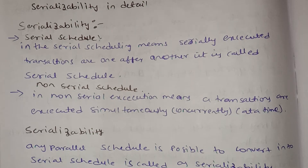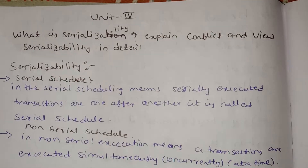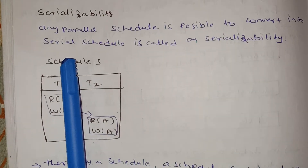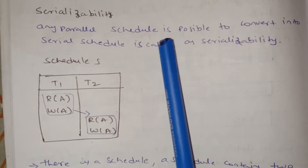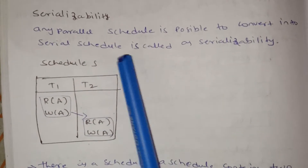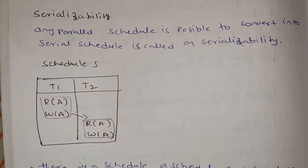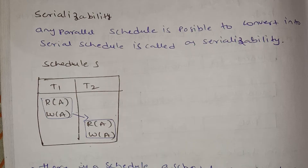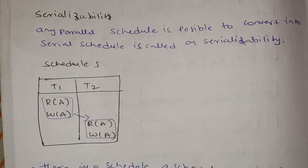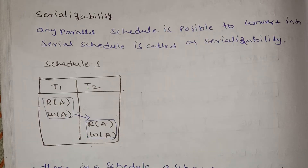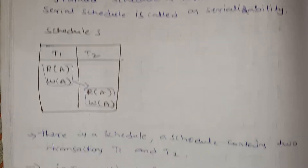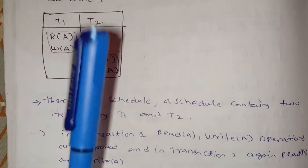At a time it will be concurrent. Serializability means a Parallel Schedule is possible to convert into a Serial Schedule. When a Non-Serial Schedule is converted to a Serial Schedule, that is called Serializability.